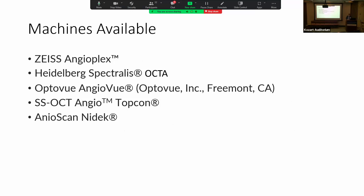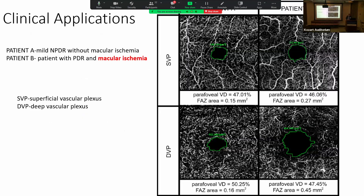These are the machines we have available. Let's talk about the three standard clinical applications. To summarize, the three important things are: A, quantifying macular ischemia; B, looking at choroidal neovascular membranes; and C, looking at retinal neovascularization.